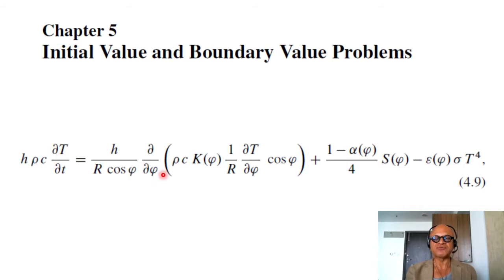Phi is the latitude, R is the radius of Earth, and dd phi of this term here, rho C k phi, 1 over R dtd phi cosine phi, which is the temperature gradient, and you can think of k phi as the diffusion coefficient.